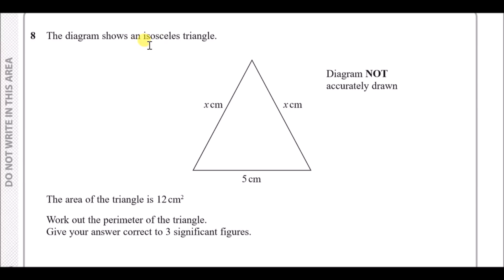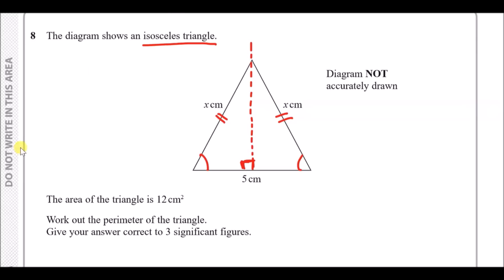Number eight: the diagram shows an isosceles triangle. Isosceles means two lengths and two angles are the same. We're told two sides are both 2x centimetres. Because the two equal sides are the same, if you split the triangle in half you get an identical vertical on both sides, giving a right-angle triangle. The area of the triangle is 12 cm²; work out the perimeter.